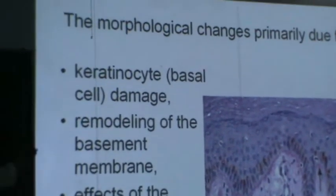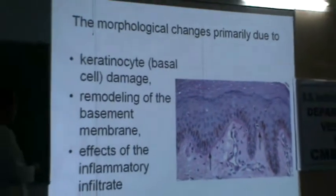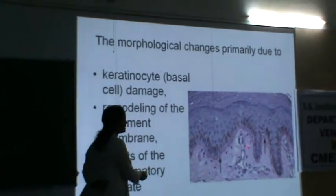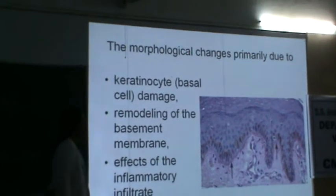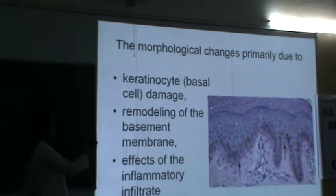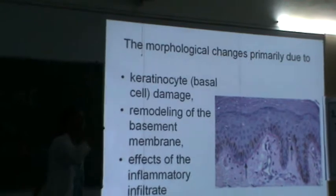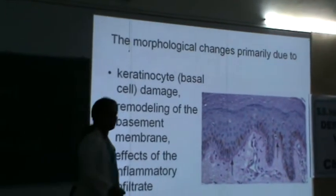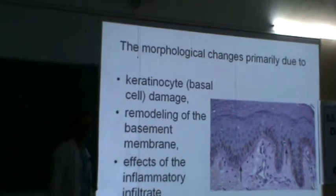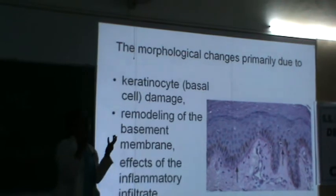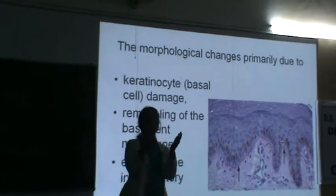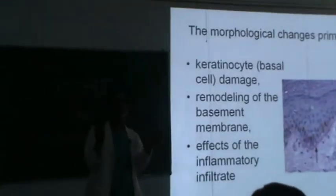The morphological changes are primarily due to keratinocyte damage — specifically damage to the basal cells — then remodeling of the basement membrane, and effects of inflammatory cells. These three things constitute the morphological changes we observe under the microscope. One more advantage for you to become dermatopathologists: whenever a biopsy is done, a specimen is received and sent to us. As pathologists, we look at how the specimen looks macroscopically, to the naked eye first, then at the cut section, then we go to micro.